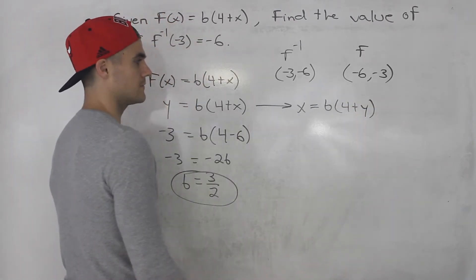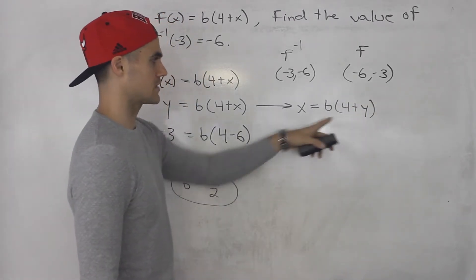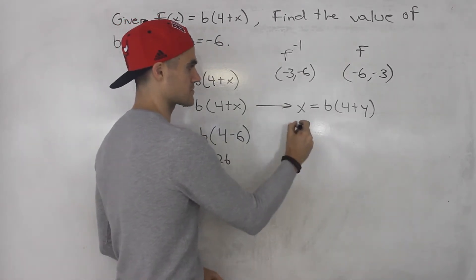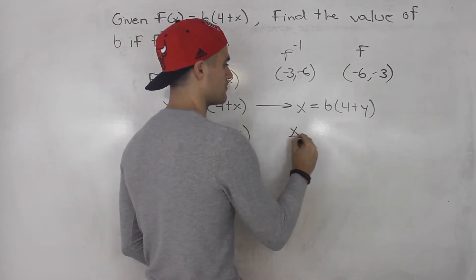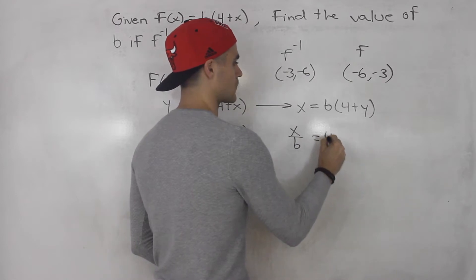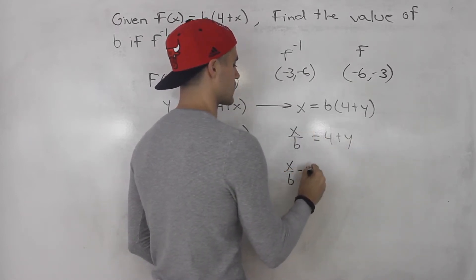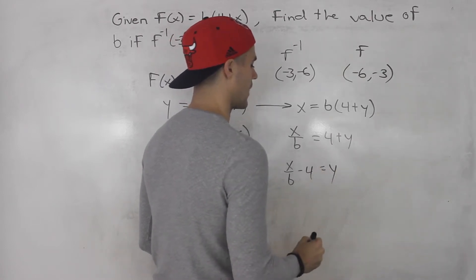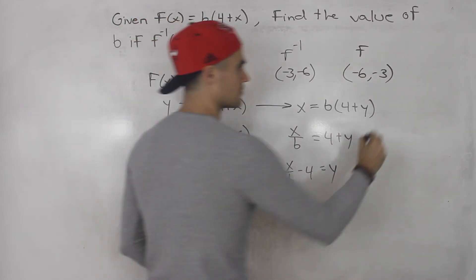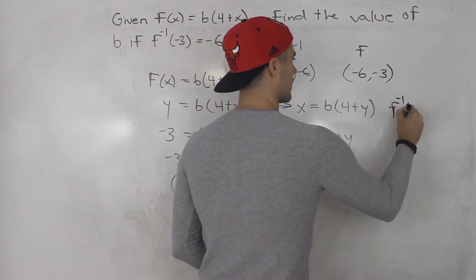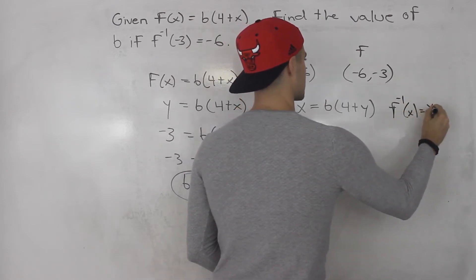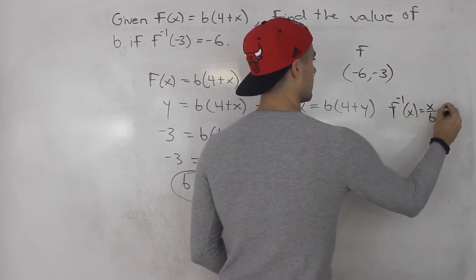So you got to isolate for y. From here, what we can do is divide both sides by b. So we'd have x/b equals 4 + y, and bring that 4 over. So x/b - 4 equals y. So that's the inverse. Basically the inverse is x/b - 4.